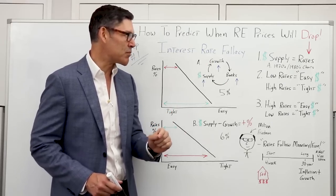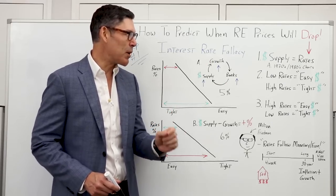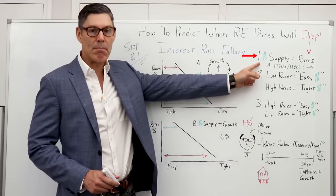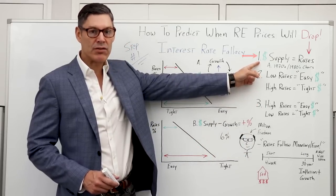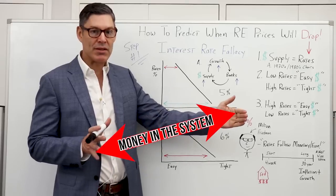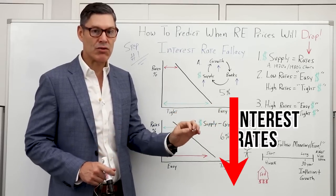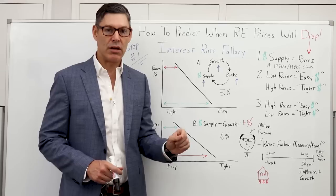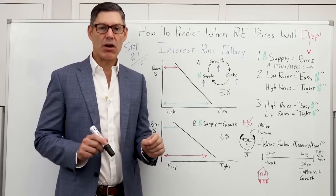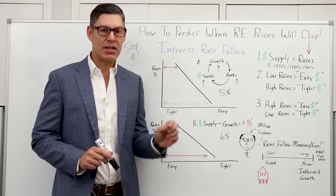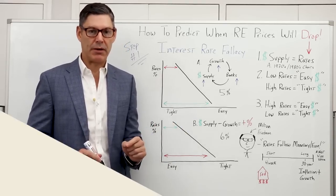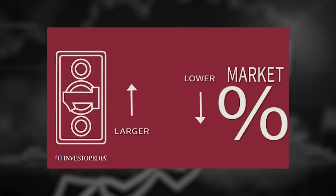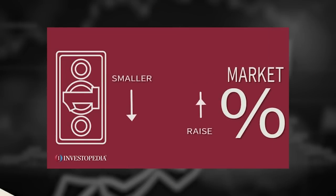First, let's go over some misconceptions. Most people think that interest rates have something to do with the money supply — in other words, the more money we have in the system, the lower the interest rates are. This is kind of an old school Austrian way of thinking. As one clip articulates: 'A larger money supply lowers market interest rates, while a smaller supply tends to raise them.'